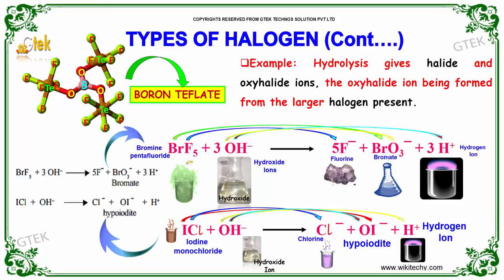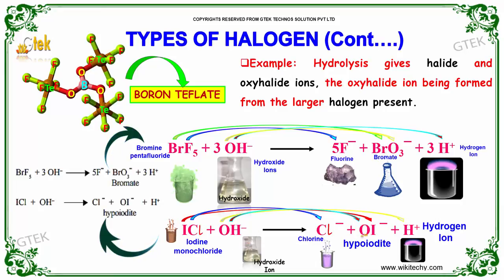For example, bromine pentafluoride reacts with hydroxide ions to give fluoride, bromate, and hydroxide ions. Iodine monochloride reacts with the hydroxide ion to provide chloride, hypoiodite, and hydrogen ions.